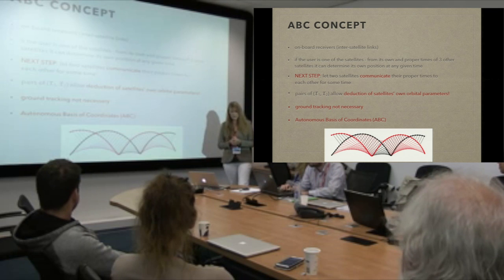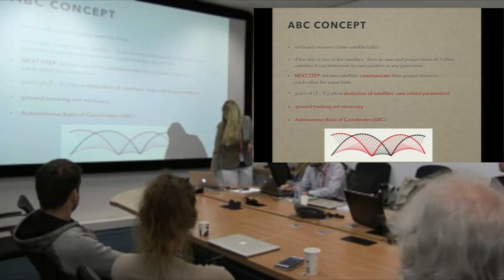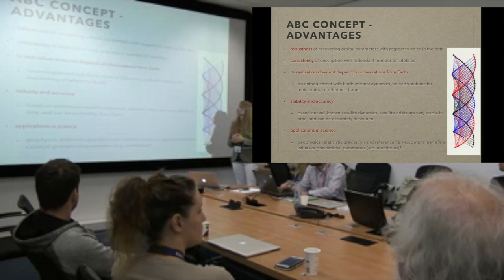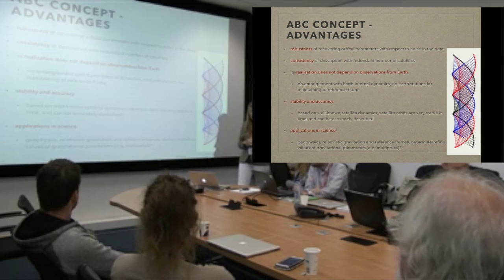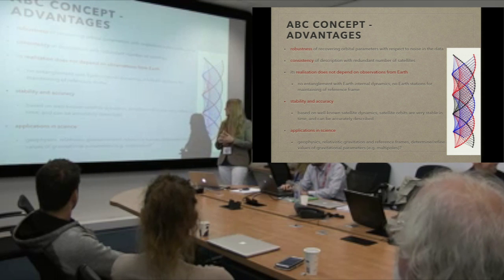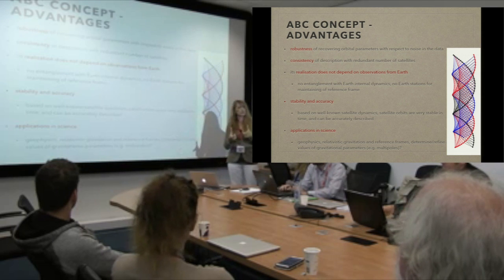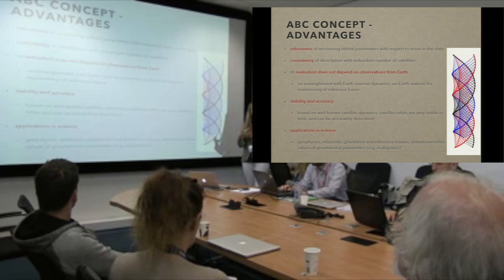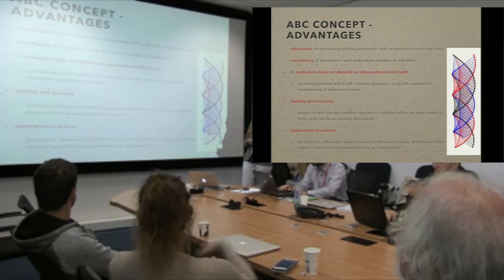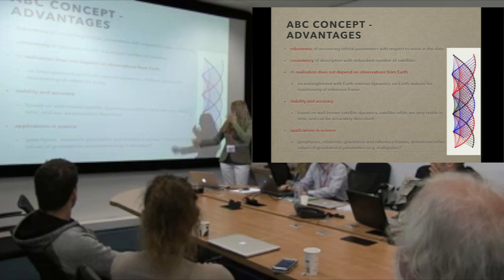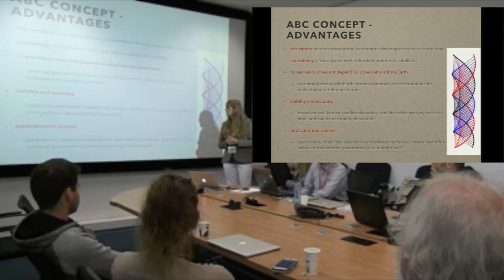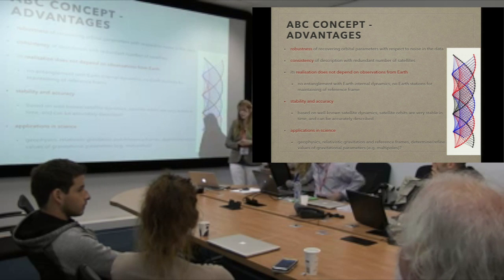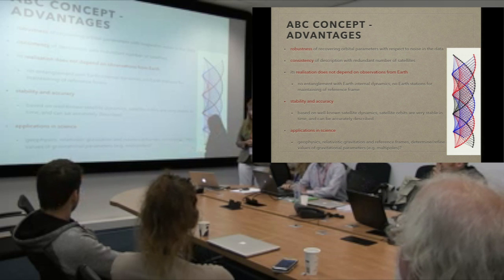These satellites determine this reference frame. The advantages of this are that such a system is very robust. We can have redundant satellites — for example, if we have two satellites this is already working, and if we have three, four, or even more, we can check the consistency of results. It is very stable and accurate, and these stable satellite orbits can bring many applications into science.